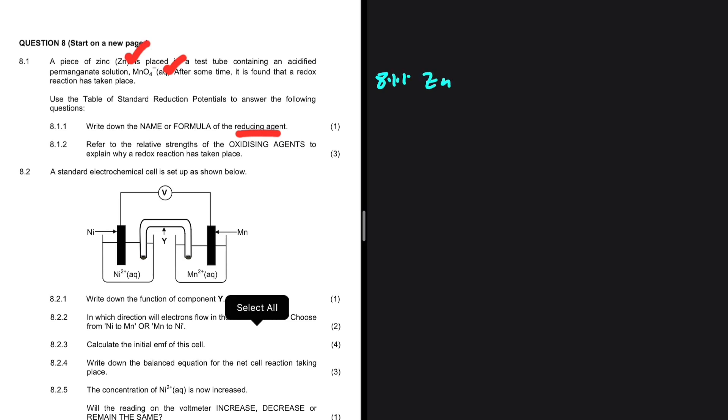Why are we saying that the reducing agent is zinc? That is the question in 8.1.2. So let's address that. When we look at Zn2+ and MnO4-, MnO4- is a stronger oxidizing agent, so it will undergo a reduction.